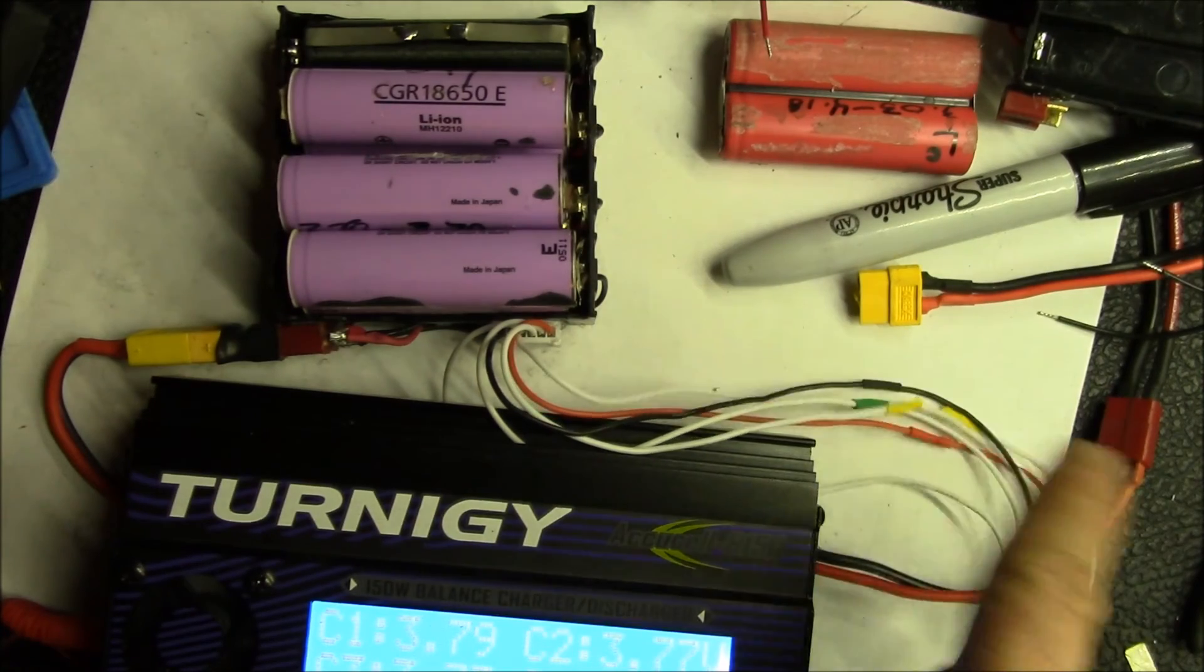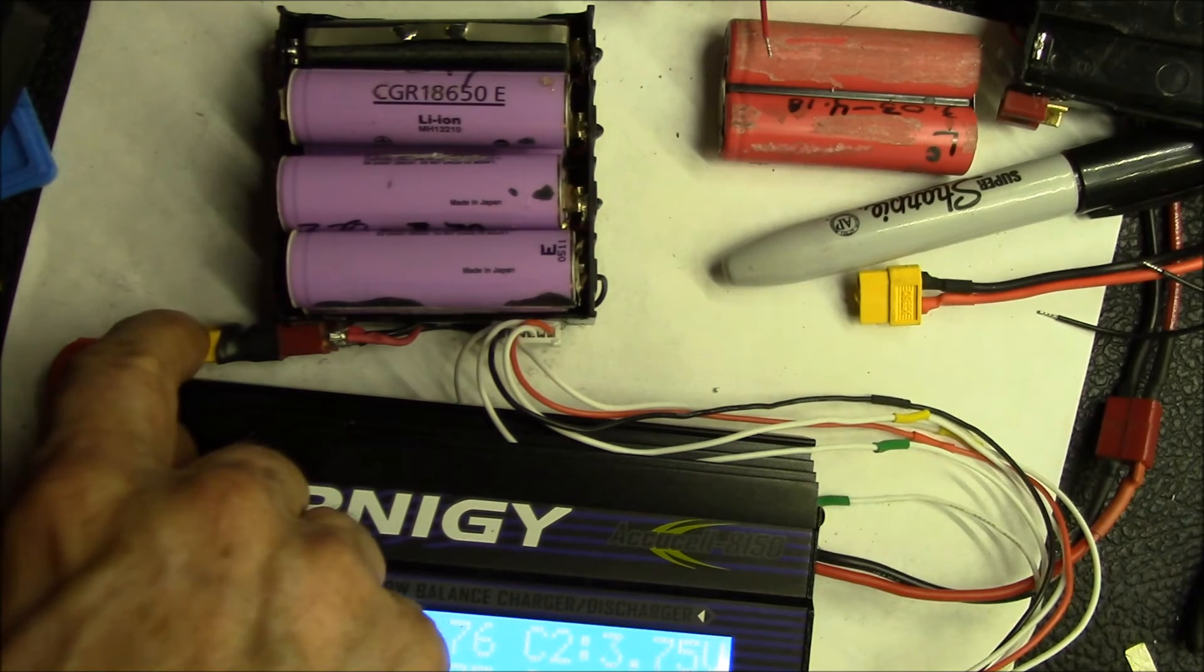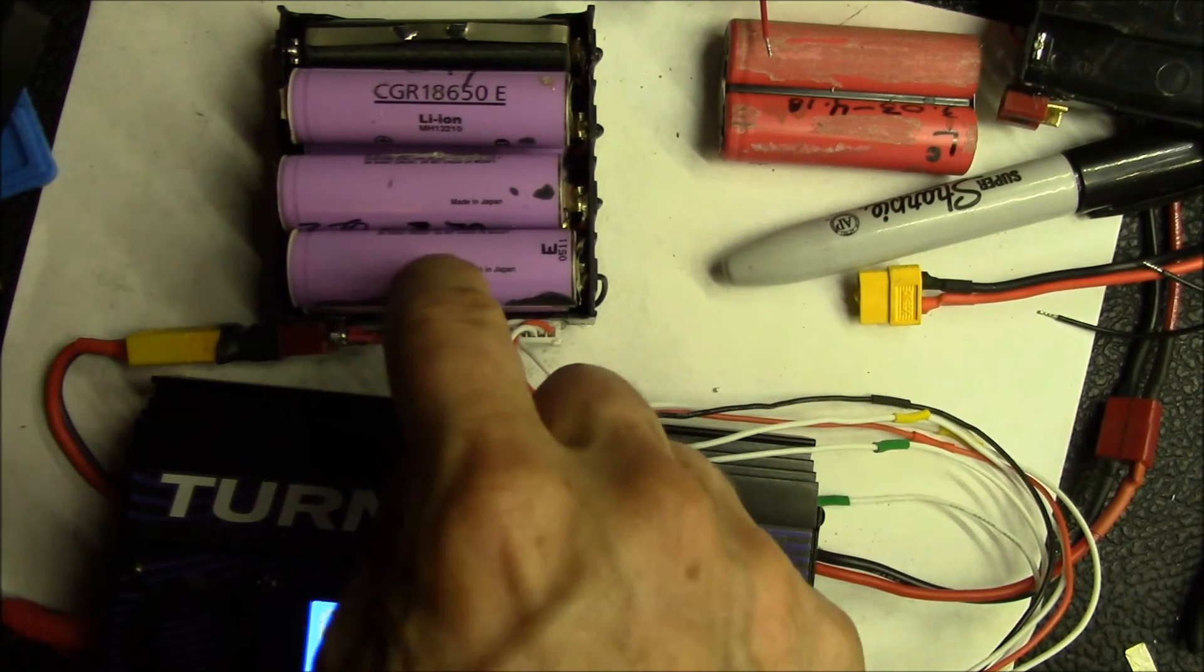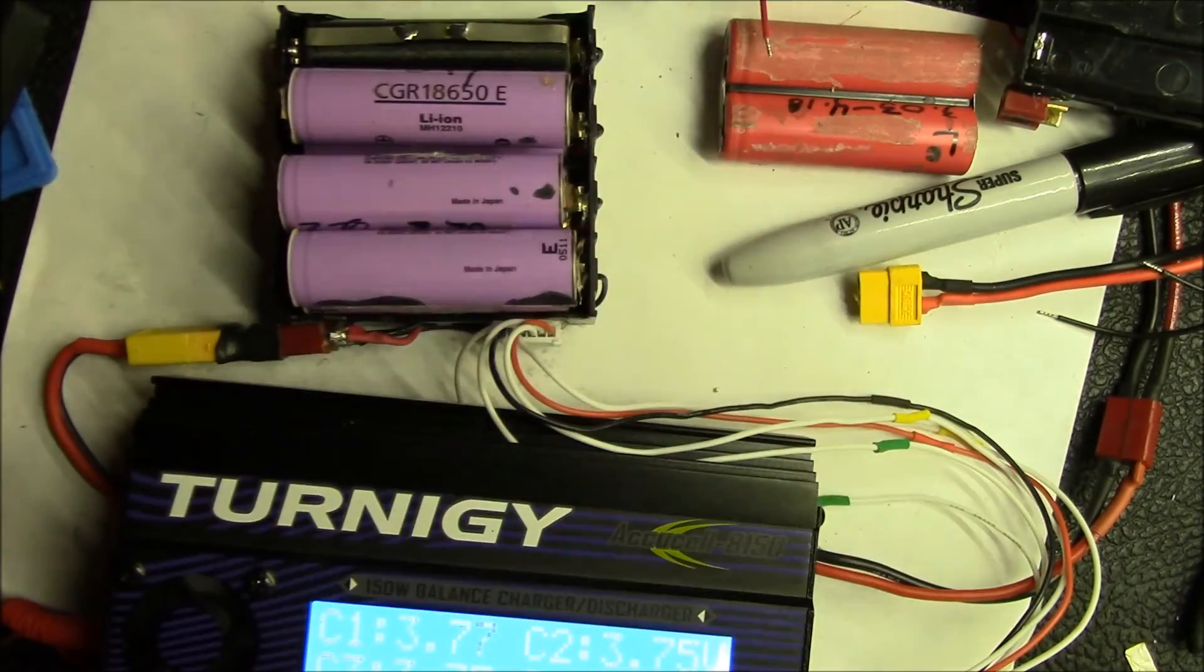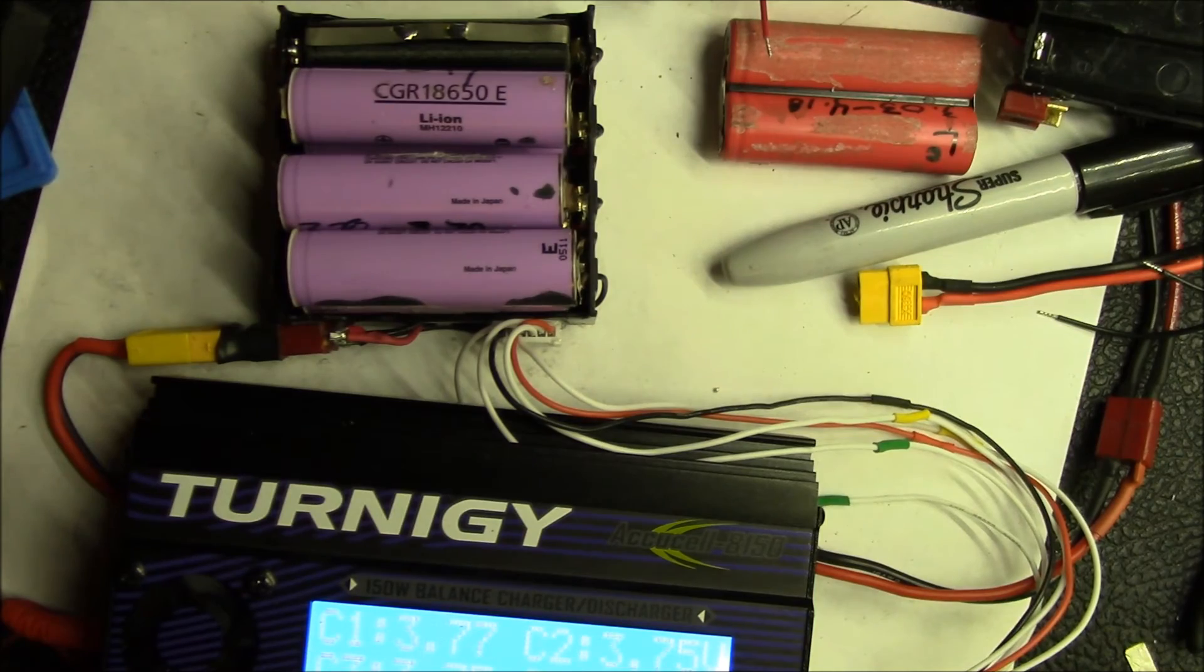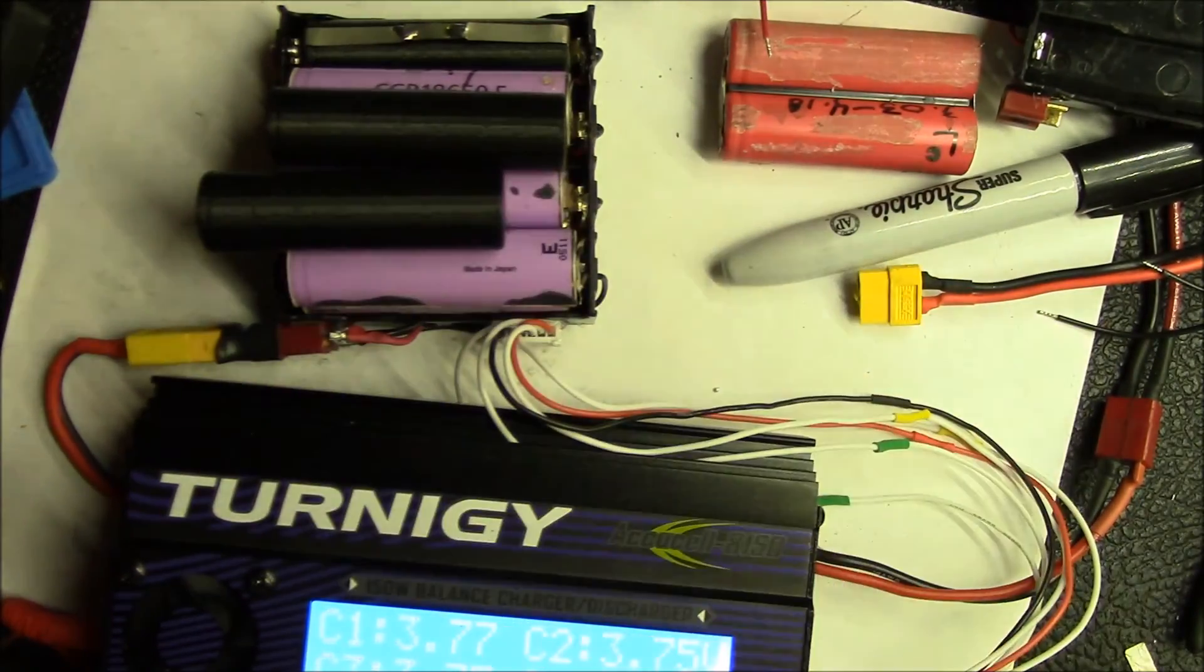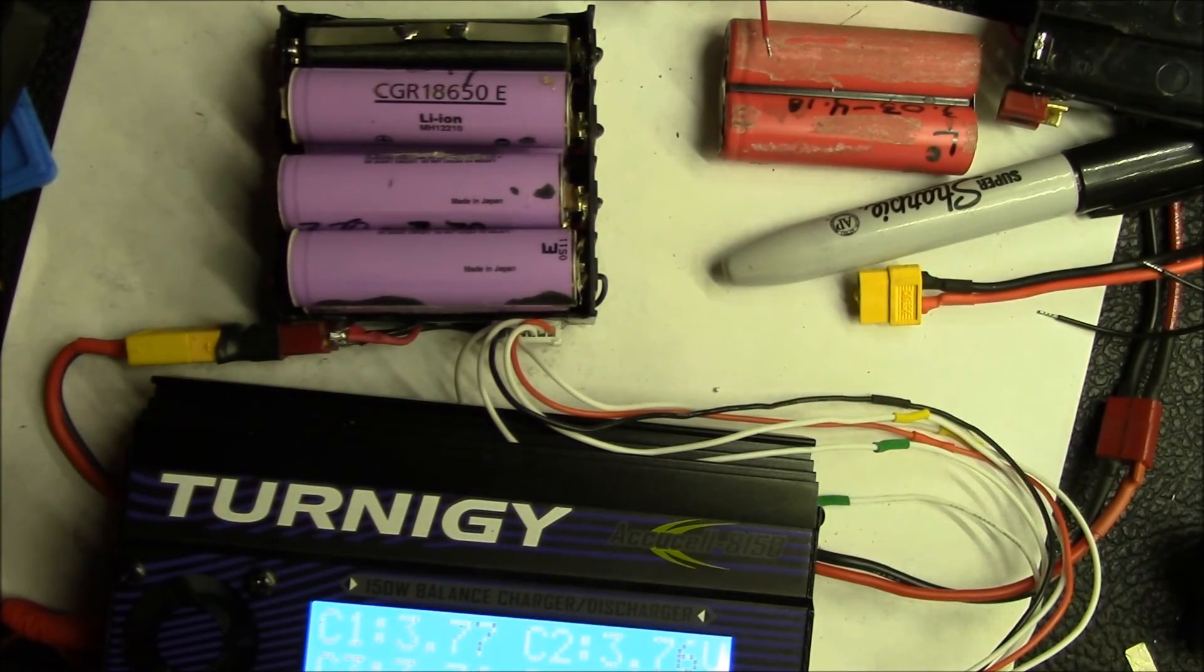And the nice thing is I just leave everything plugged in. I don't have to switch balance leads. I don't have to switch the power leads. I just plug in as many batteries starting from one, two, three, or four, and then fill everything that I don't have batteries in with dummy cells. So I can put in one of those, two of those as I need to. And that gives me a pretty nice setup.